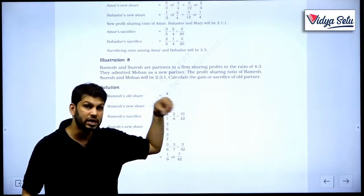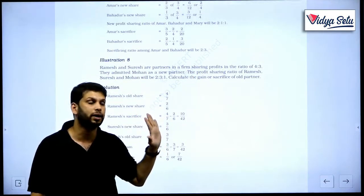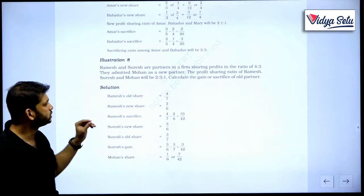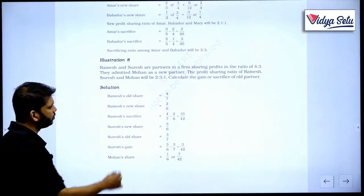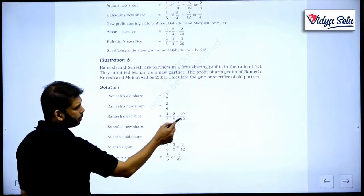That's called gaining. Even he will then pay to the sacrificing partner. So let's see. Ramesh's old share is 4 upon 7. His new share is 2 upon 6. We can find out the sacrificing 10 upon 42.